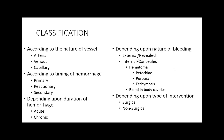If we classify hemorrhage, we classify different types of conditions according to the nature of the vessel which is cut due to bleeding. We classify hemorrhage into arterial, venous, and capillary — based on which blood vessel is involved.